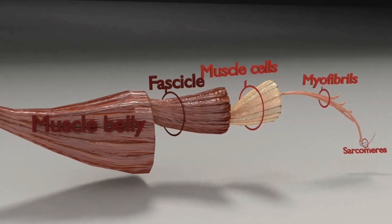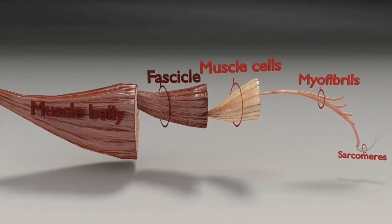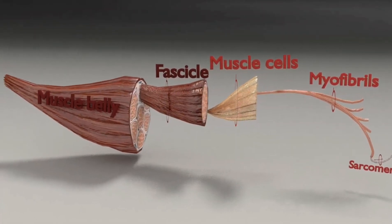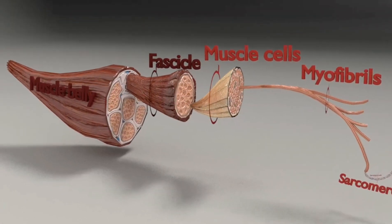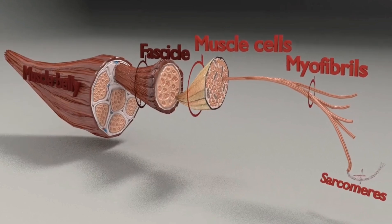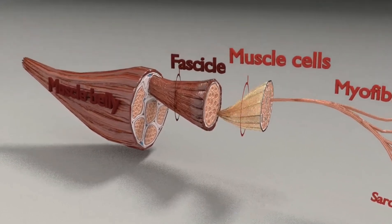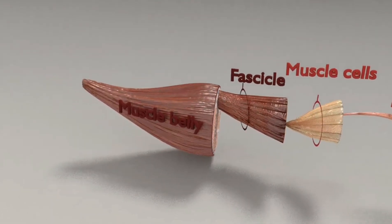Skeletal muscles are commonly referred to as muscles. There are three parts to a typical skeletal muscle: the origin, the belly, and the insertion. The widest part of a muscle is called the belly.